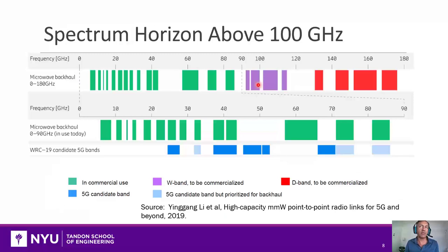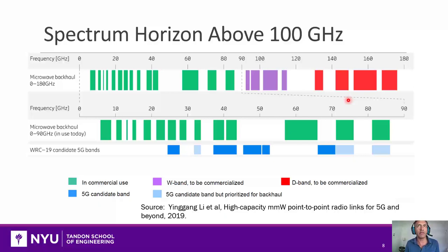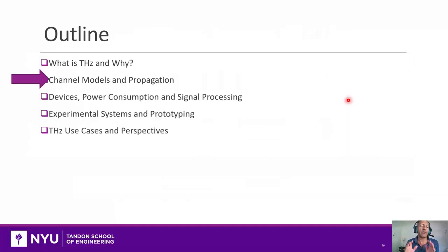Let's talk about what spectrum is available for terahertz right now. This chart comes from an excellent presentation from Ericsson on backhaul links. The green bands show commercial bands used for backhaul point-to-point links today, and you can see a large number of commercial applications all the way up to about 100 GHz. In the near future, there are plans to commercialize bands in the W-band around 100 GHz and the D-band around 140 GHz — both in the upper millimeter wave or sub-terahertz range. One could imagine going even higher for future research. There is very real commercial progress in opening up these bands for terahertz communication. With that, we can move on to the next topic: channel models and propagation.